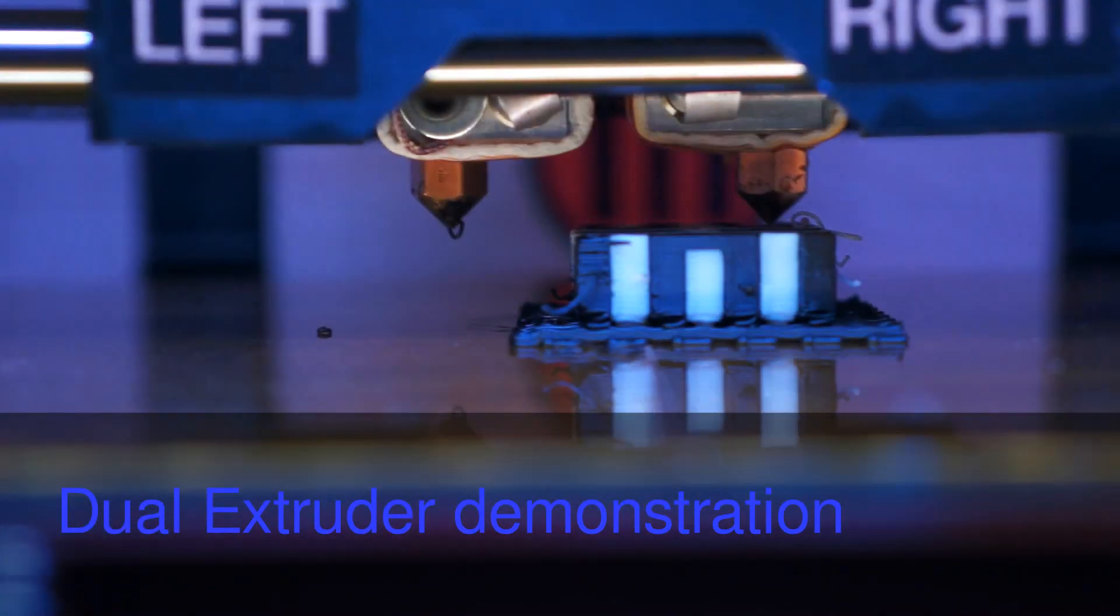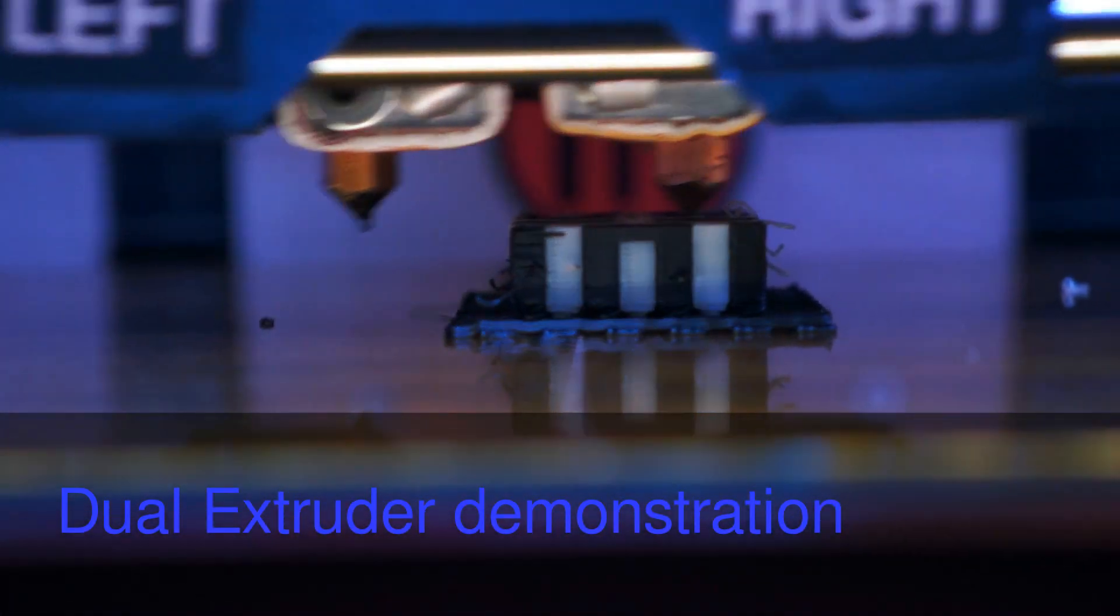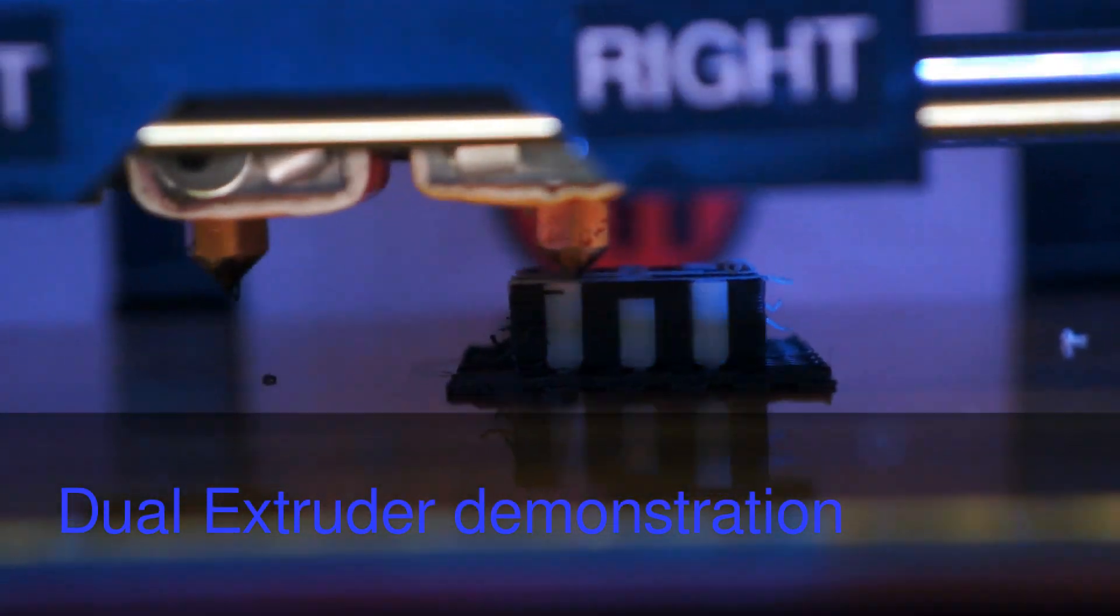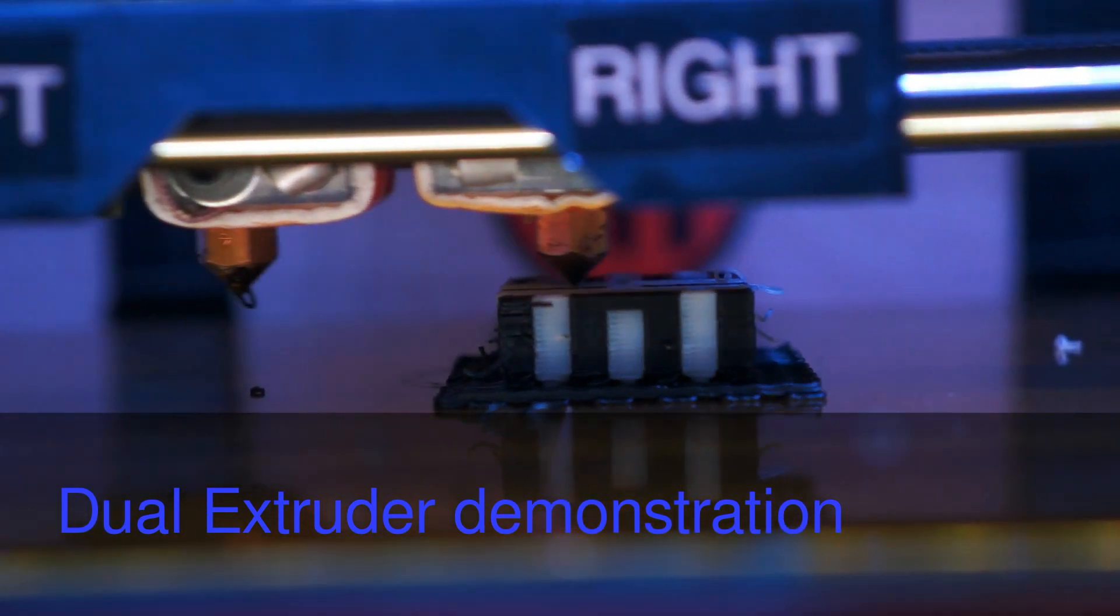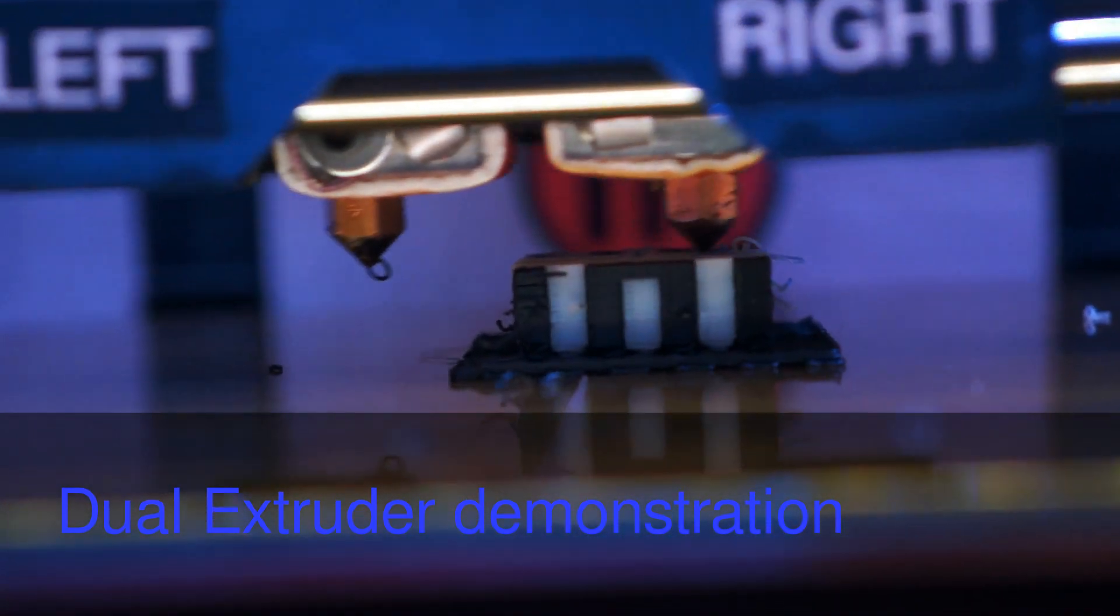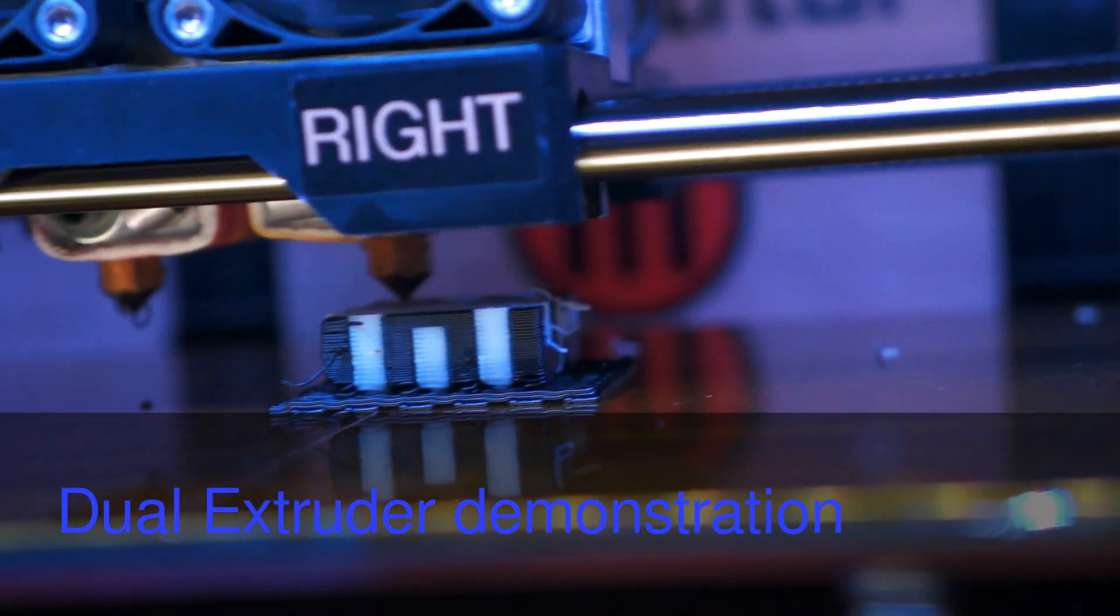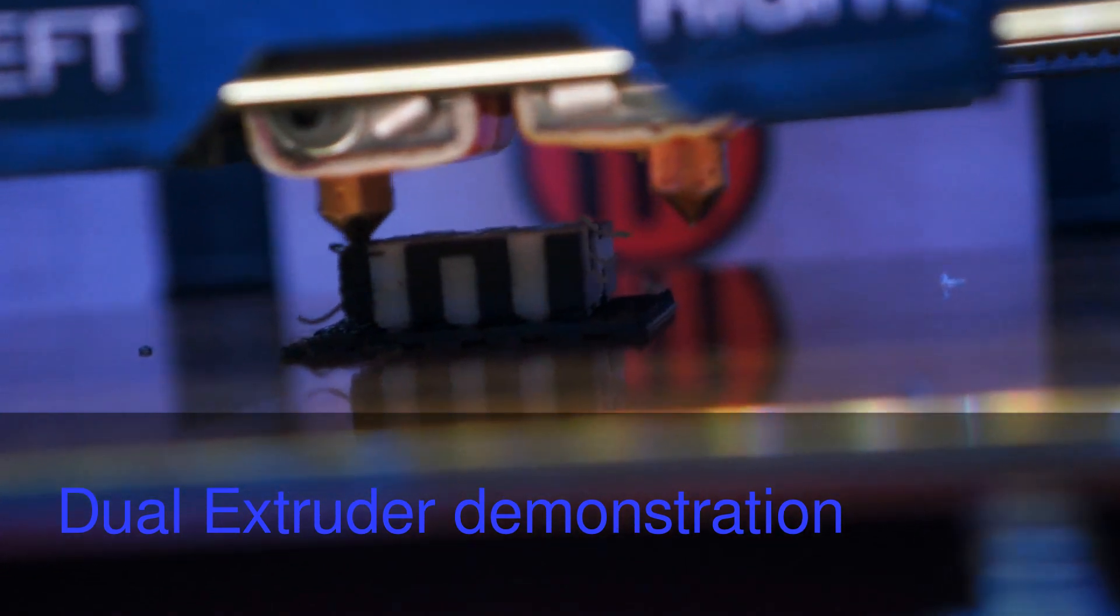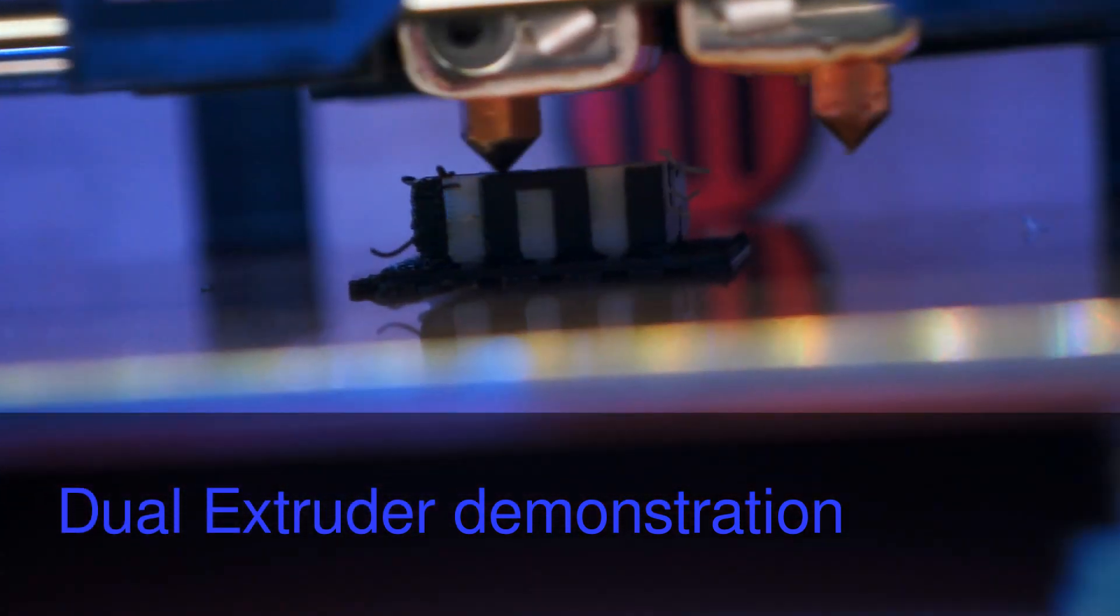So today I try to use the dual extruder to make some complex block with two colors. So this is a Hilbert cube and using the 3D printer. Now it's under printing.